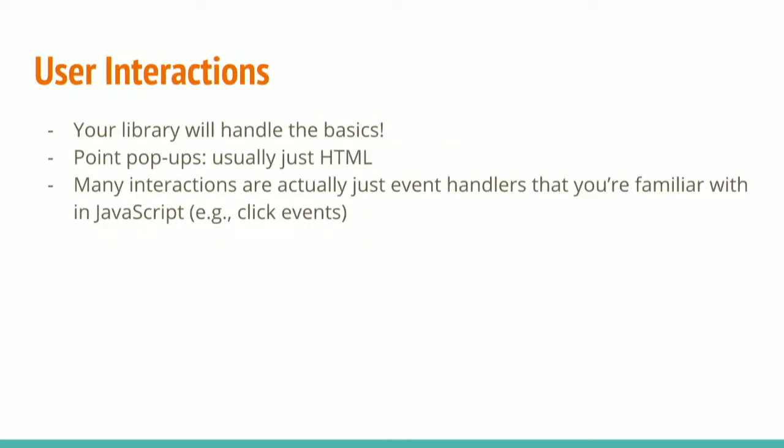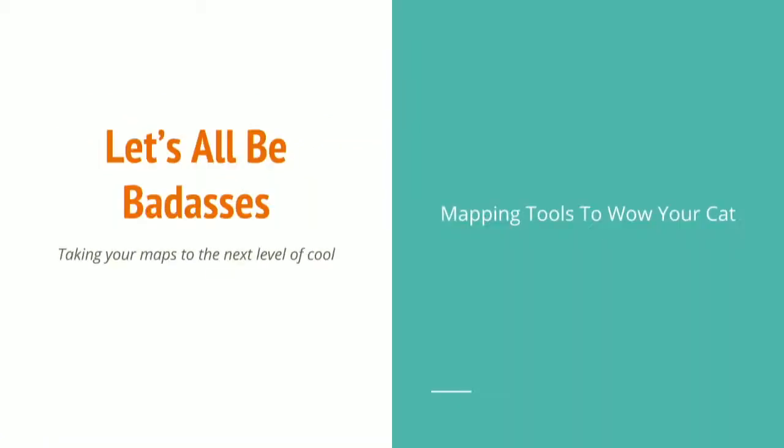For user interactions, the library you choose — whether it's Google Maps API or Leaflet — will handle the basics for you, which is really nice, and you can customize all you want. Adding popups to your points is usually just adding some HTML, styling it, and grabbing the data associated with that point. Most interactions on a map are event handlers you're already used to, like click events.